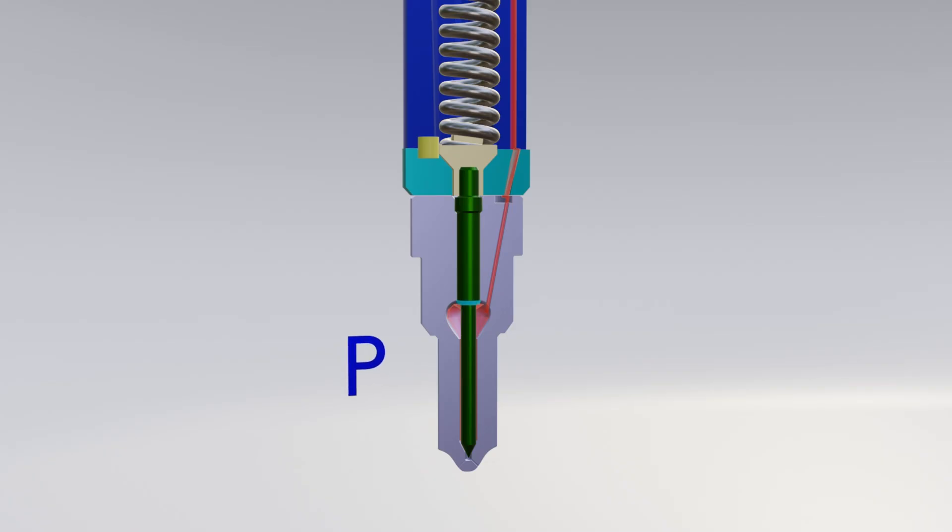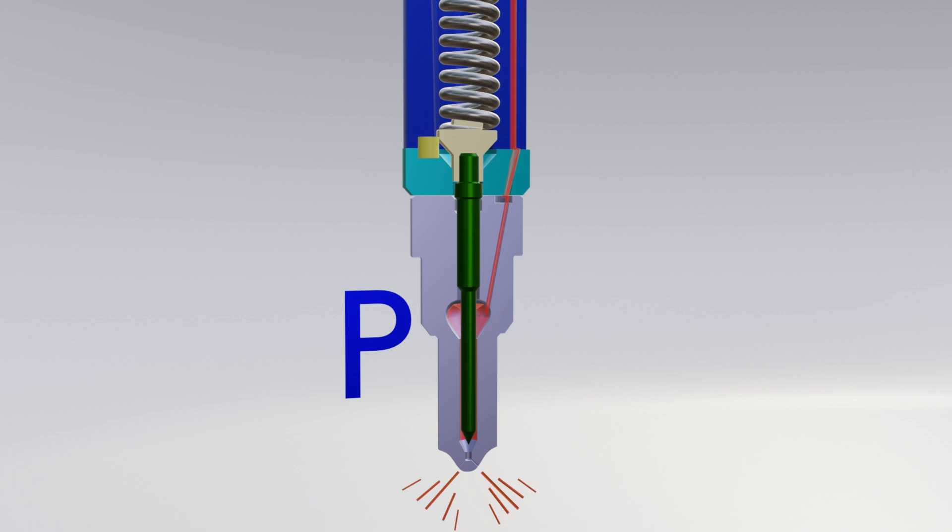During the working stroke of the high pressure pump, pressure in the line is rising. In the moment when it becomes higher than the adjusted pressure of the spring, the needle will go up and we will have injection of fuel into the cylinder.